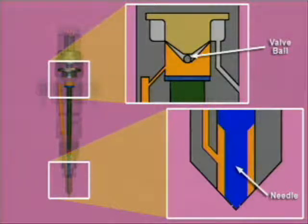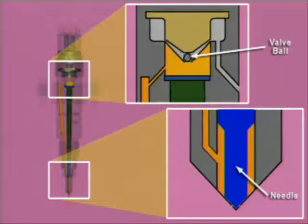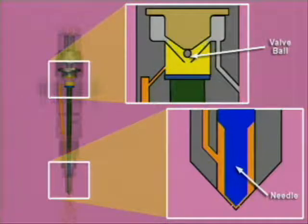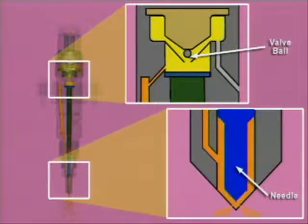Injection begins when the ECM energizes the coil and allows the valve ball to lift off of its seat. This allows fuel to flow out of the control chamber to drain, reducing the pressure in the chamber. The reduced pressure above the control plunger allows the needle to lift off of its seat and high-pressure fuel to flow into the cylinder through the nozzle.